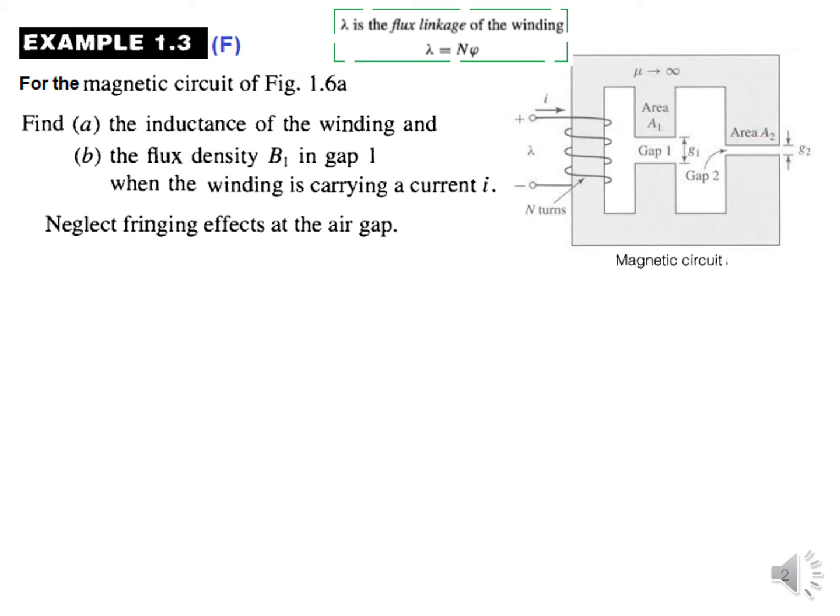Now we have to find (a) the inductance of the winding, and (b) the flux density B1 in gap 1 when the winding is carrying a current i. And there's a term here called neglect fringing effect in the air gap.